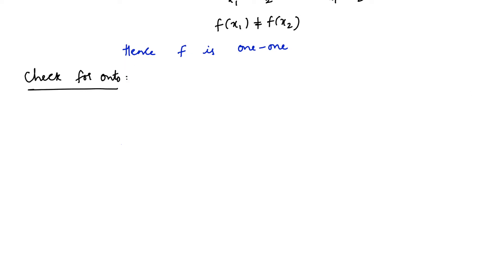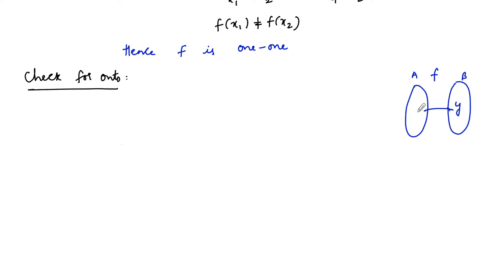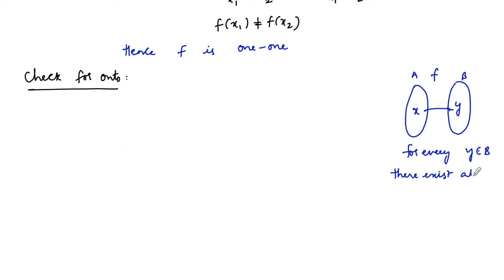Now let's check for onto. As per the definition of onto, a function from A to B is onto if for every y ∈ B, there exists at least one x ∈ A such that f(x) = y.